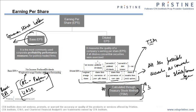All these numbers would be given to you in the exam. The only thing you need to derive is the number of stocks that would be issued from the stock options. From now on, my focus will be to explain this Treasury Stock Method.